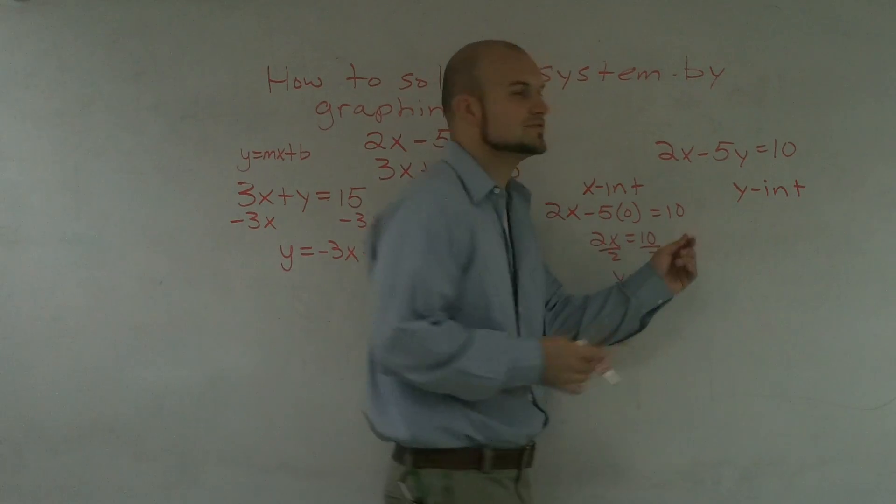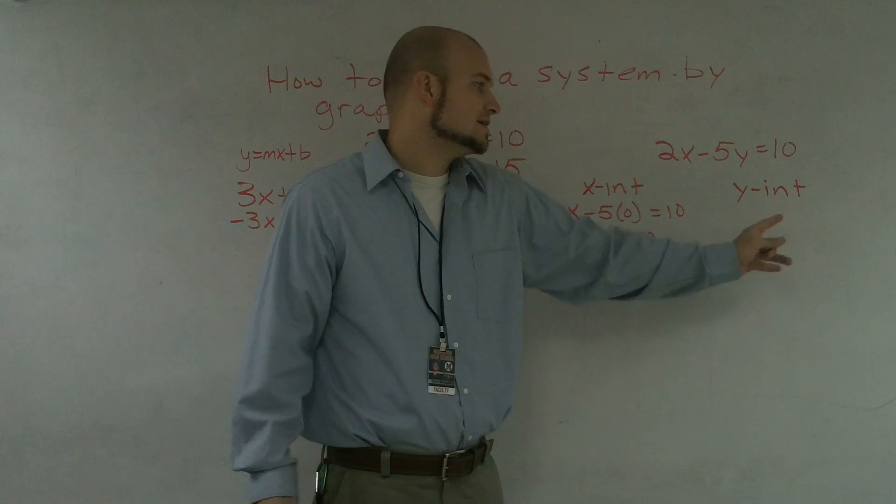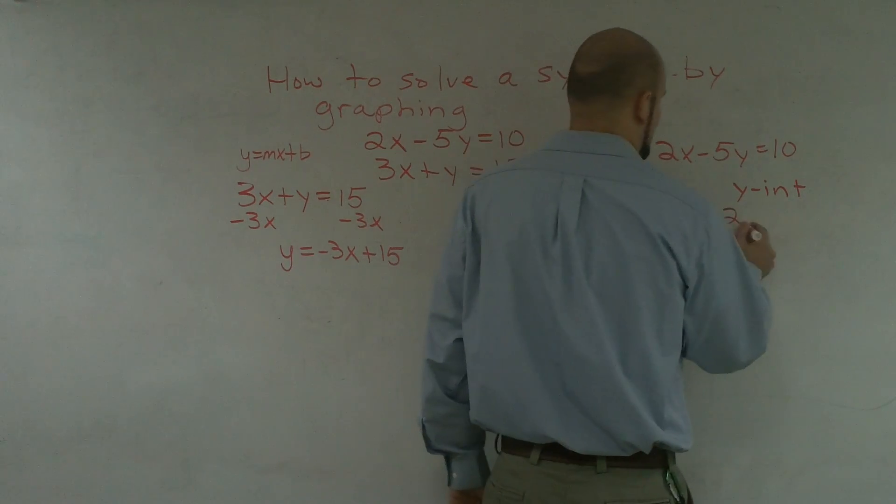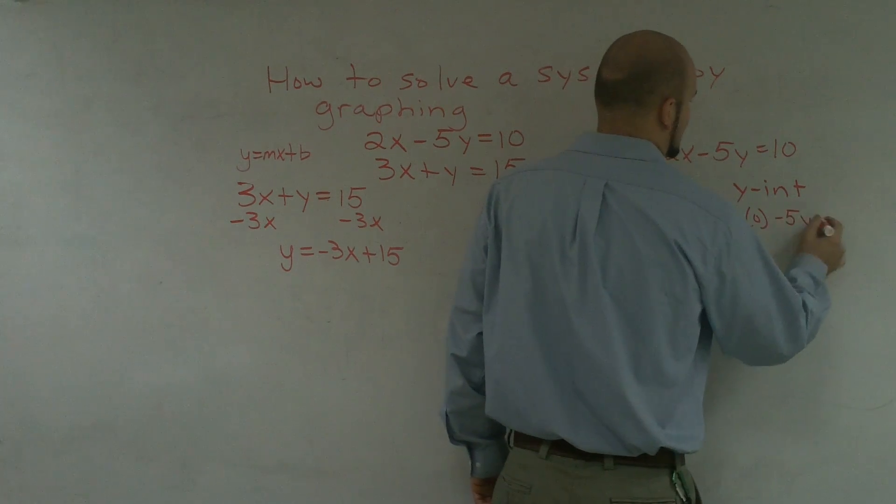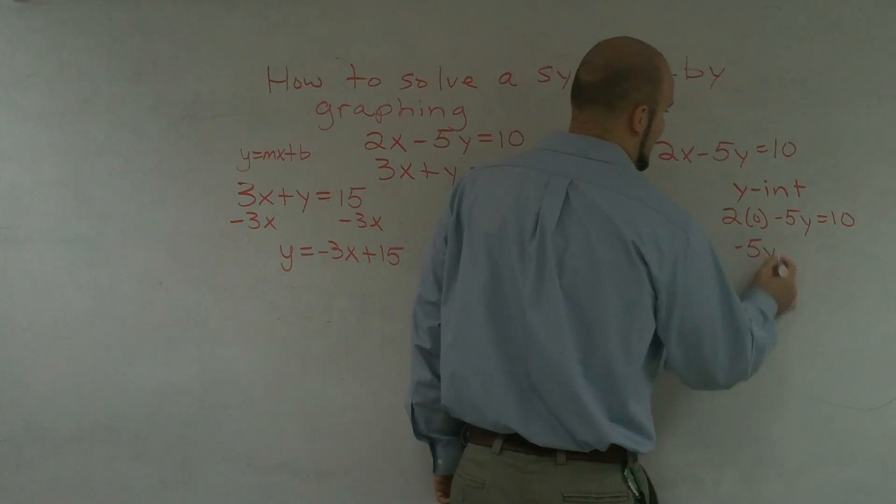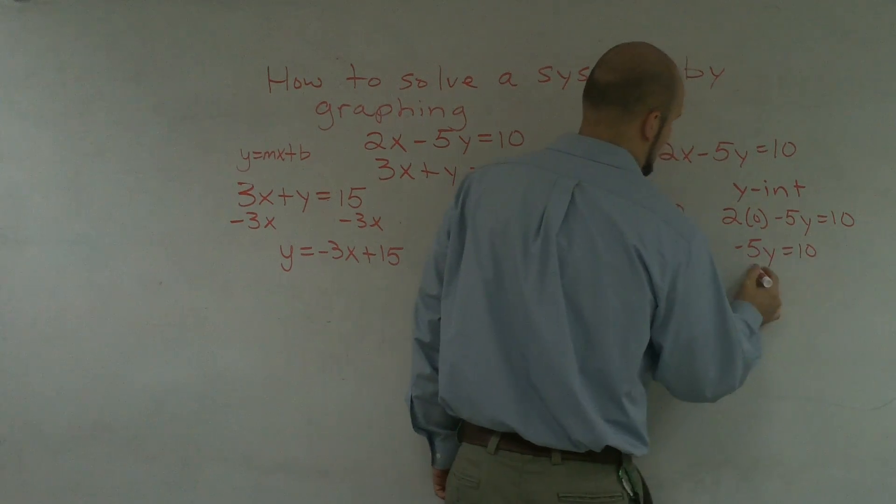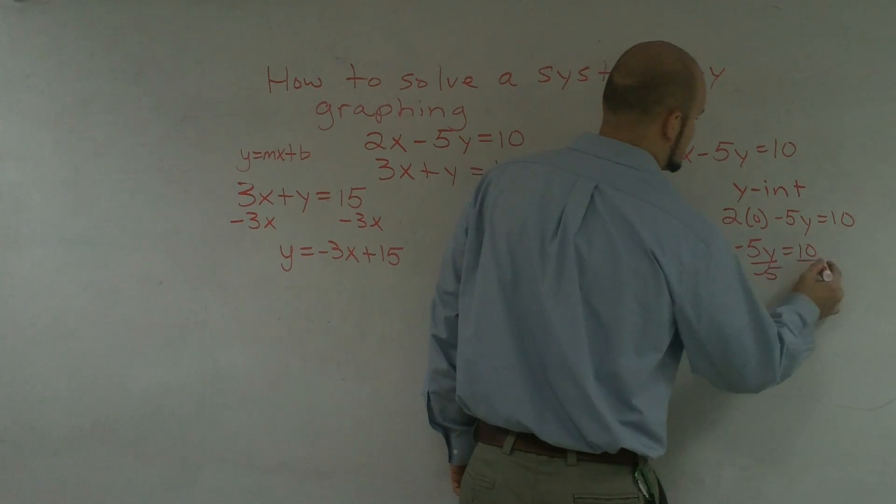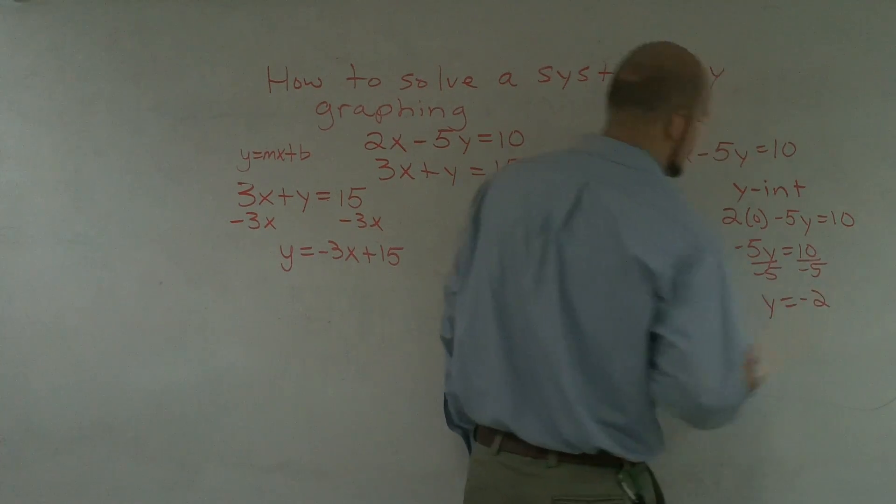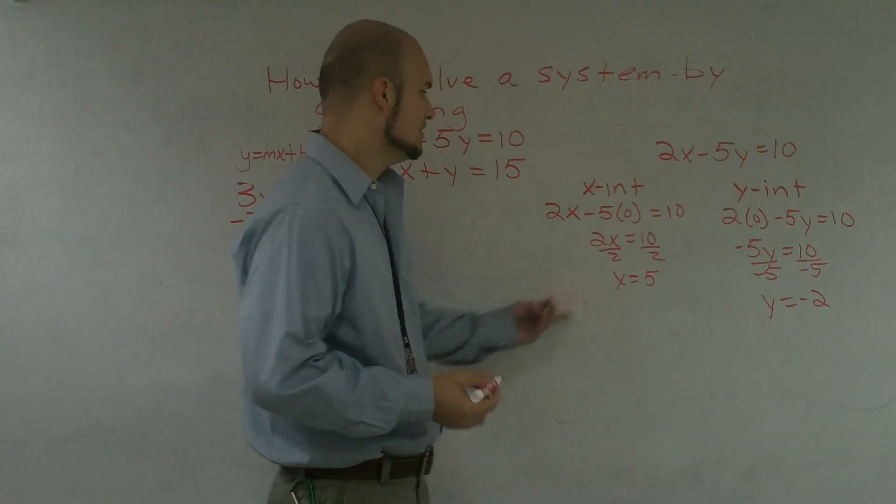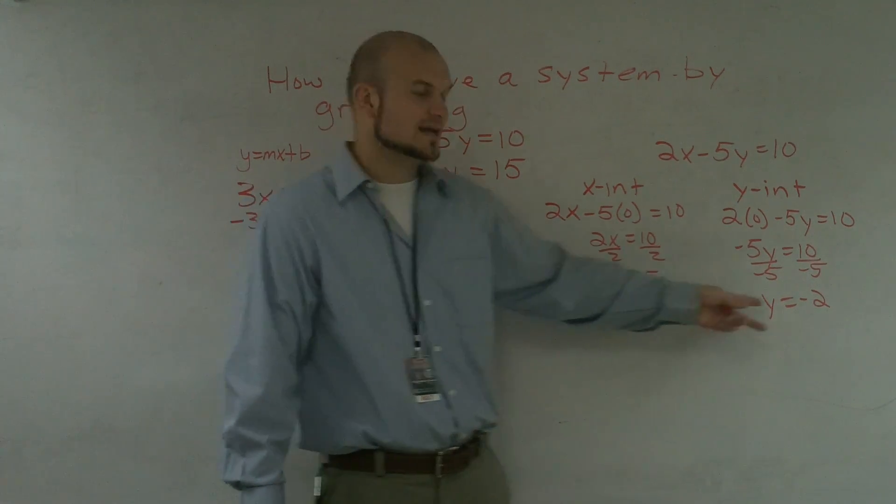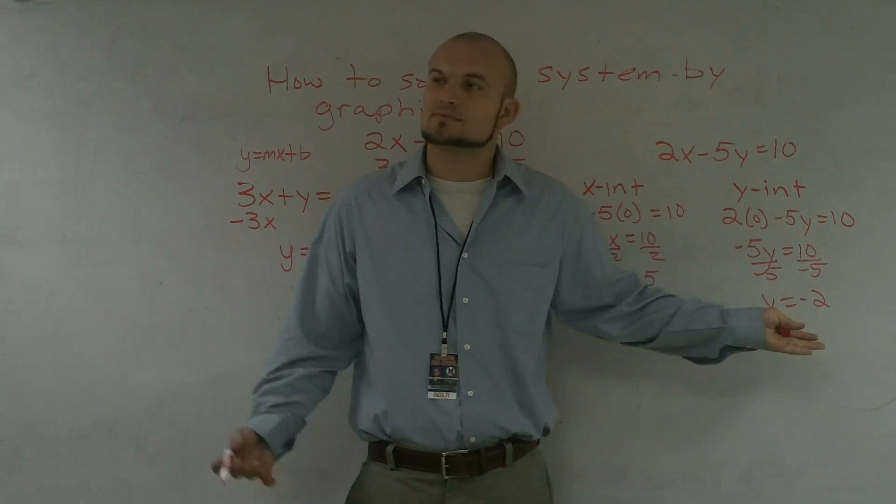For my y-intercept, it's where the graph crosses the y-axis. And therefore, my x value is going to be 0. So I do 2(0) - 5y = 10. And therefore, it becomes -5y = 10. Divide by -5 on both sides. y = -2. So therefore, when I'm going to graph these, all I have to do is graph on the x-axis 5 and on the y-axis -2 and then connect them. And that's my graph.